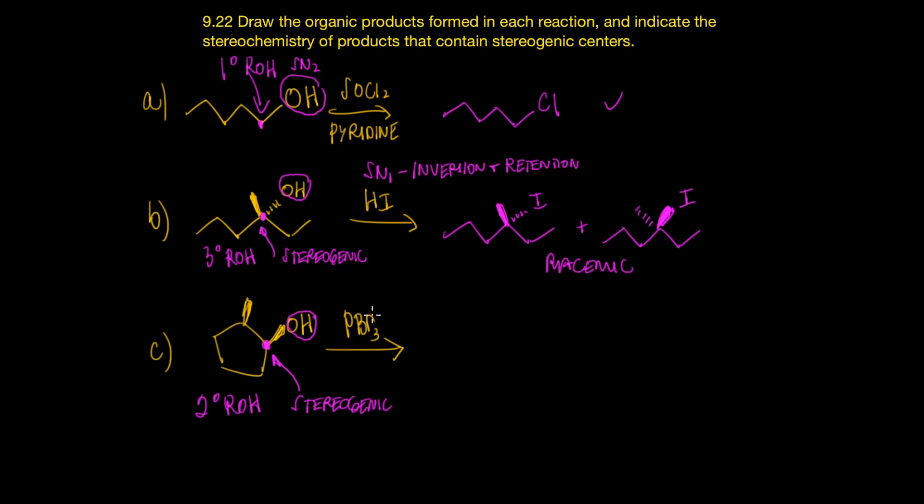And in the reaction of PBr3, it reacts with alcohols by SN2. Now just by itself, secondary alcohols can react by SN1 or SN2. But remember that PBr3 only reacts by SN2. And that's just a detail you have to be familiar with. So when we perform this reaction, SN2 gives you inversion.